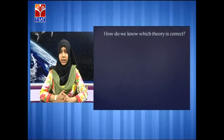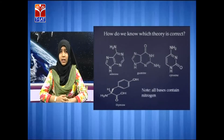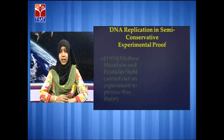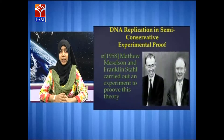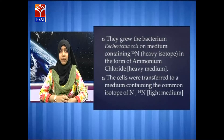From all three, how do we know which theory is correct? The evidence lies in the presence of nitrogen in the base pairs like adenine, guanine, cytosine, and thymine. In 1958, Meselson and Stahl did an experiment to prove semi-conservative replication. They grew E. coli bacteria in a medium containing N15, which is a heavy isotope of nitrogen, in the form of ammonium chloride (NH4Cl), which produces a heavy DNA band in the centrifuge tube.